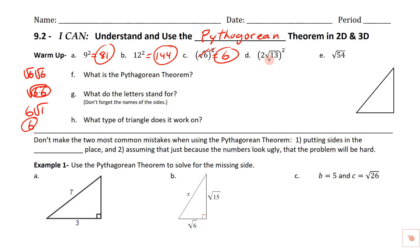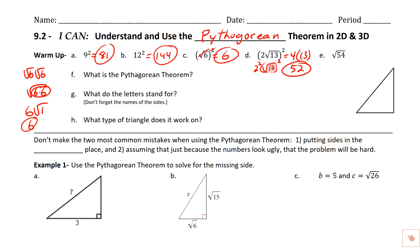On this next one, we've got 2 square root of 13, and we're squaring that. You need to be a little more careful here. We're going to square the 2 and square the square root of 13 separately. Squaring 2 gives 4, and squaring the square root of 13 gives 13. So 4 times 13 is 52.